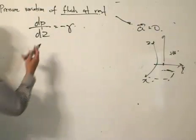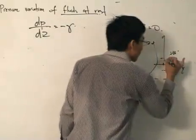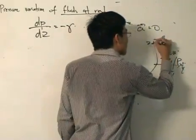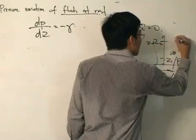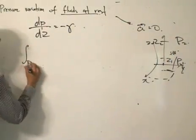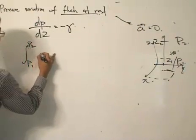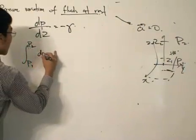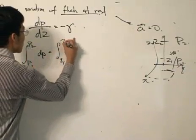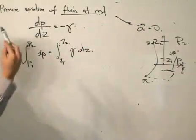Using basic integration, let's separate the variables. I'll specify this point as z1 with associated pressure p1, and z2 with associated pressure p2. Separating variables and integrating, we get: the integral from p1 to p2 of dp equals the integral from z1 to z2 of negative specific weight dz.